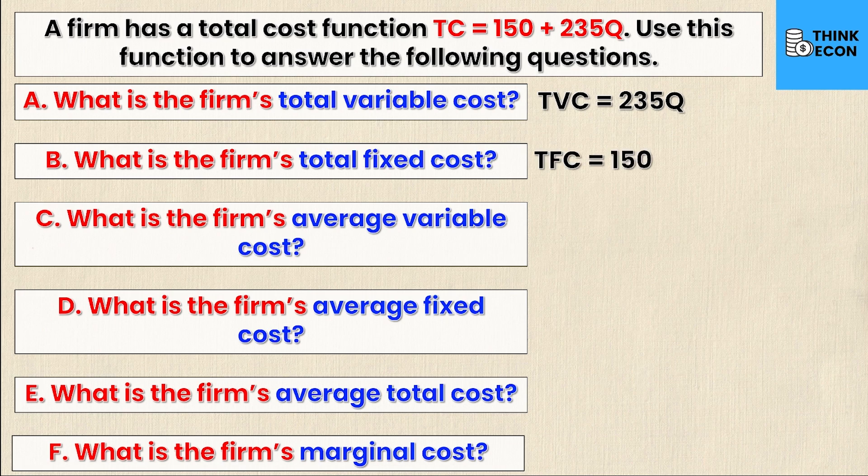And that would be the 150 at the front. The total fixed cost is equal to 150 because even if quantity produced was zero, you would still have a cost of 150. That's why we call it a fixed cost. It is not variable in any way and is not dependent on your quantity output.